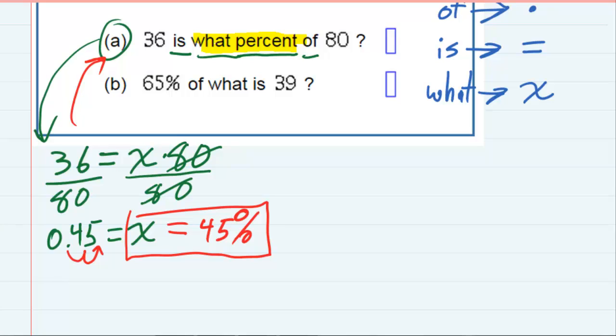And now we're going to follow the same pattern for the second one. Even though it's a different question, it starts off with 65%. And if I'm going to write an equation, we don't usually put percent signs in equations. So I'm going to convert that to a decimal, 0.65. I just move it twice to the left. So that's the first part of my equation, 0.65.